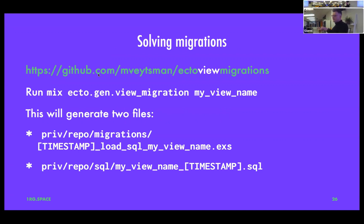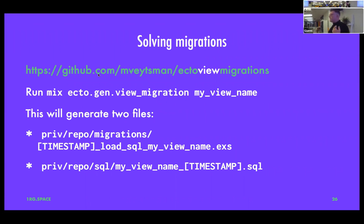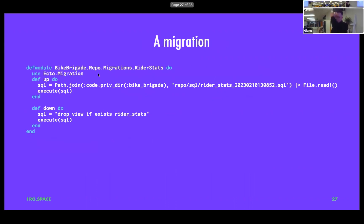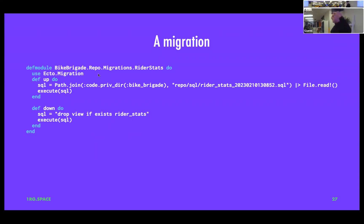So I shipped a small library — there's a typo, it should be ecto_underscore_view_underscore_migrations. I'll drop the link in the Slack. Basically it's a migration generator that gives you migrations that support views. Instead of one file, it generates you a SQL file and a migration that runs that SQL file. You edit the SQL file yourself. The file is timestamped. It's smart about rollbacks: what does it mean to roll back creating a view? If the view doesn't exist, we delete it; if it does, we go back to the previous version. It date-stamps your SQL files, rolls back to the previous version if one exists, otherwise drops it — and it also tells you where to put your files in the SQL directory.